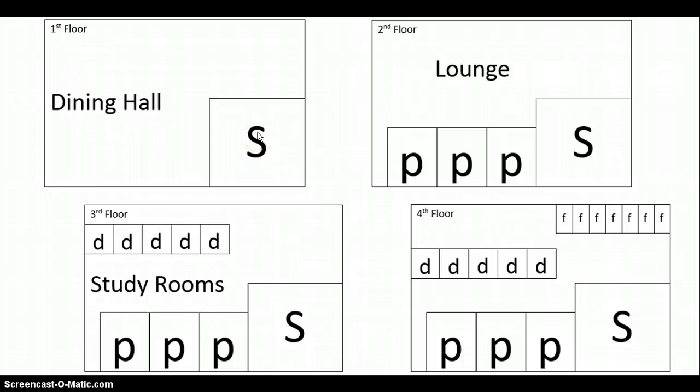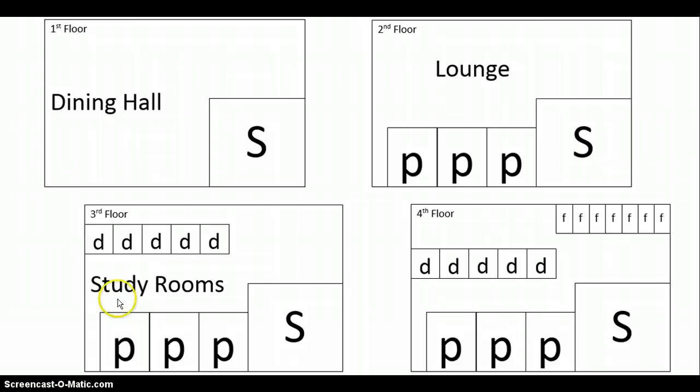Each room is going to house two residents. According to the rules on the previous slide, we'll go back to this. Mr. Aufbau says you're going to fill from the lowest floor first and then you're going to build up. I think that's pretty logical. You're going to start from a low ground level first and then work your way up to the top.